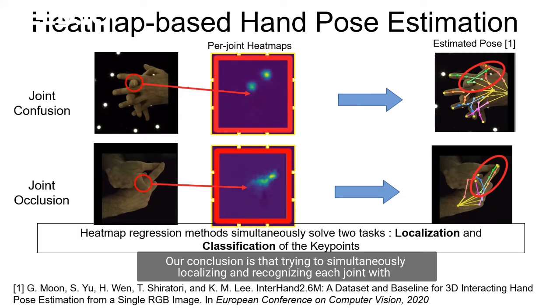Our conclusion is that trying to simultaneously localize and recognize each joint with heatmaps is very challenging and is prone to failures in complex scenarios.